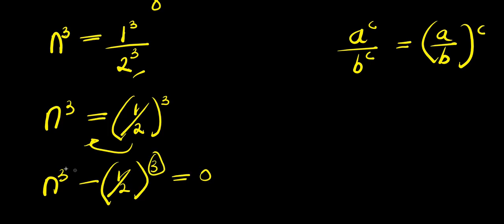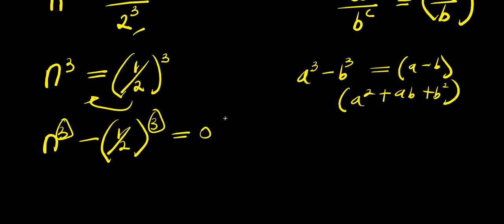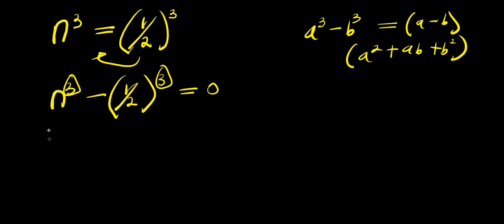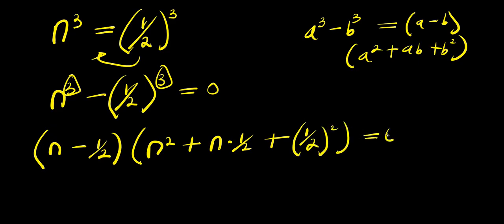Now we have a³ − b³ form here. If you have a cubed minus b cubed, this equals a minus b, times a squared plus ab plus b squared. So this gives us n minus 1 over 2, times n squared plus n times 1 over 2, plus 1 over 2 squared, equals 0.